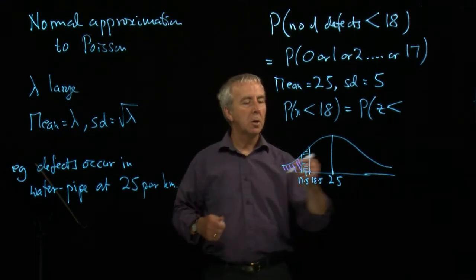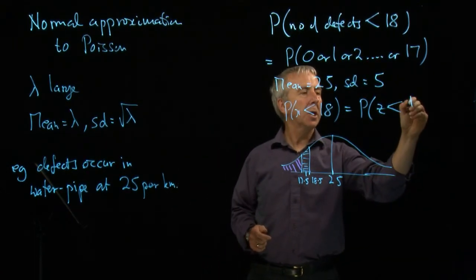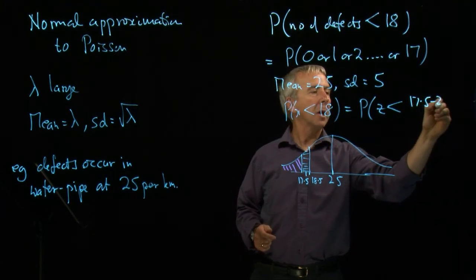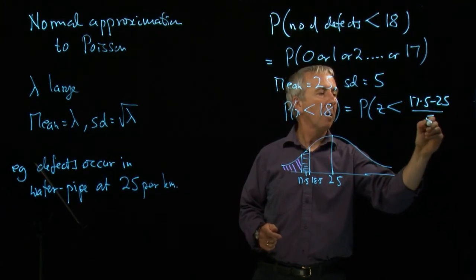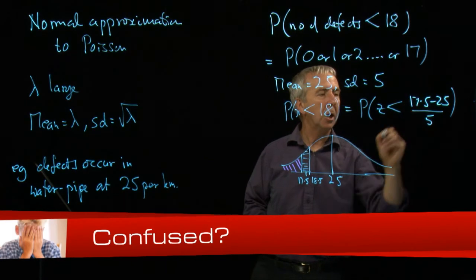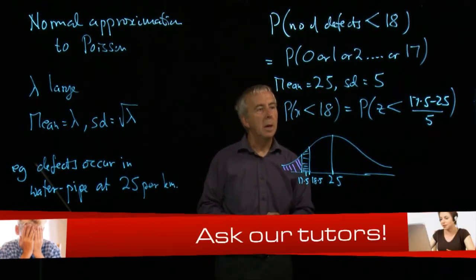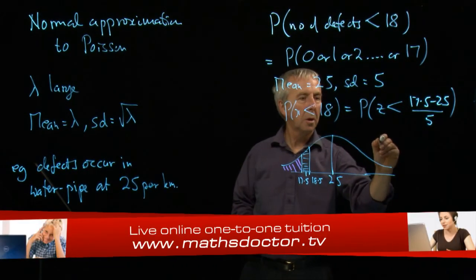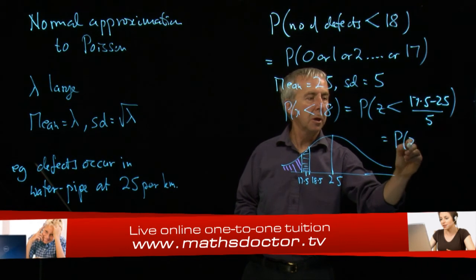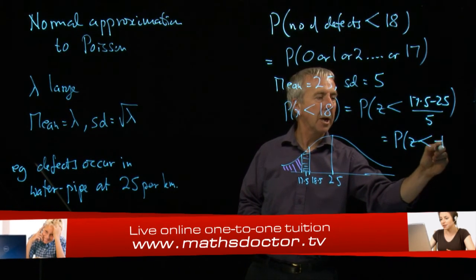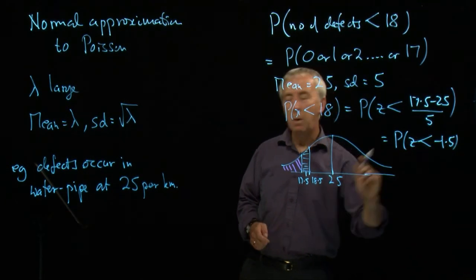So we want z to be less than 17.5, take away the mean, divide by the standard deviation. And that comes to the probability that z is less than minus 1.5.